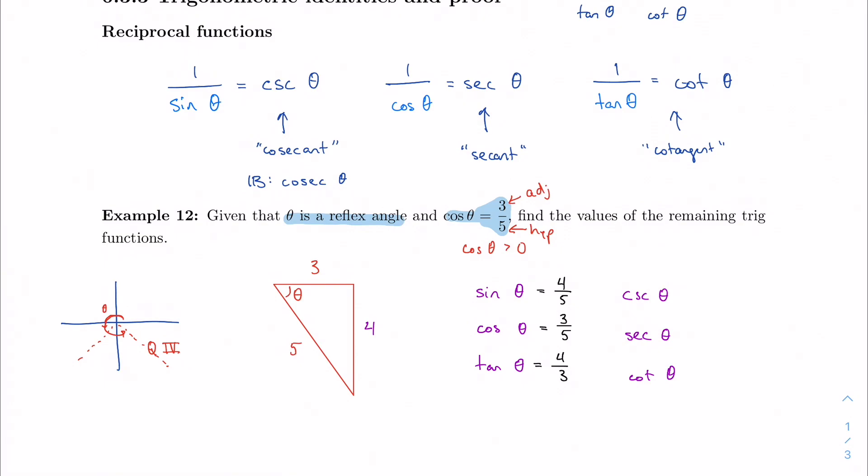And these remaining three functions, cosecant, secant, cotangent, are just reciprocals. So cosecant is the reciprocal of sine, so 5 fourths. 5 thirds for secant and 3 fourths for cotangent.